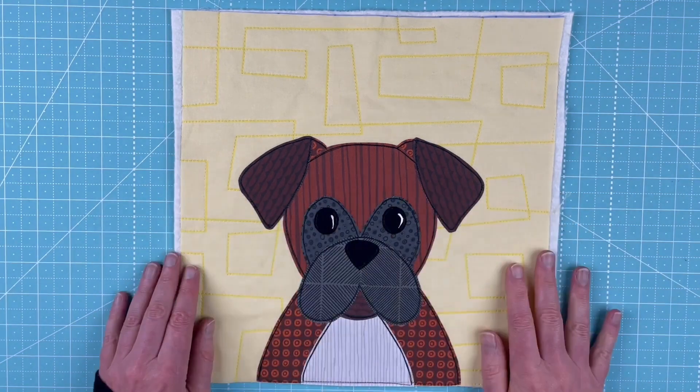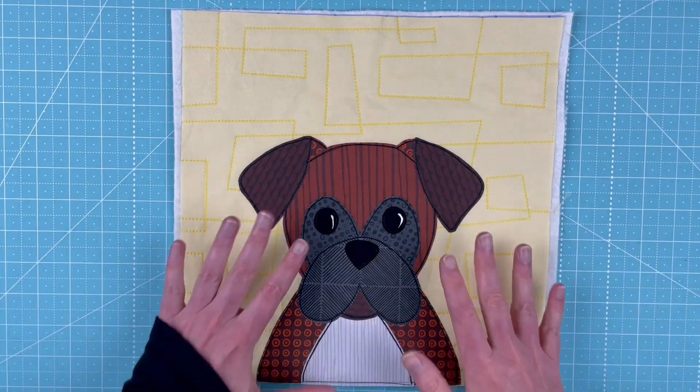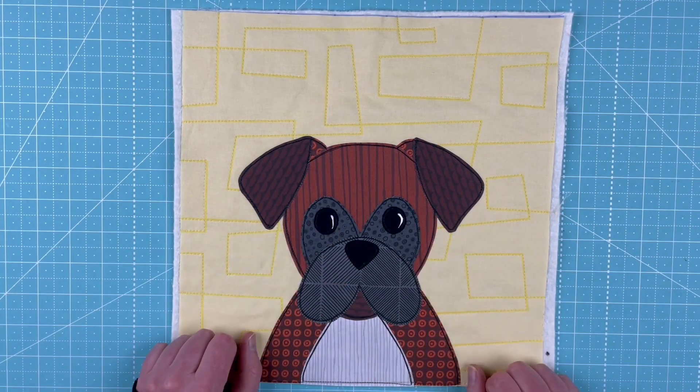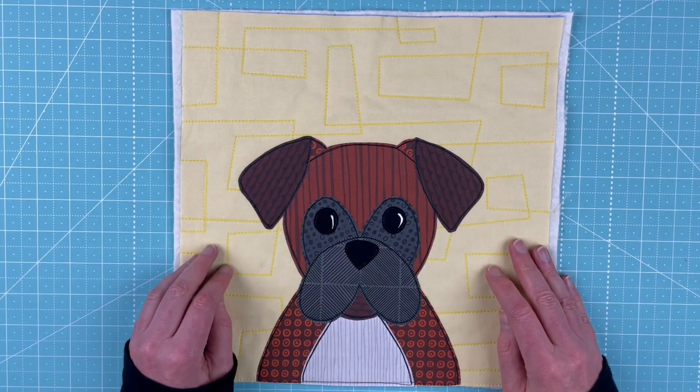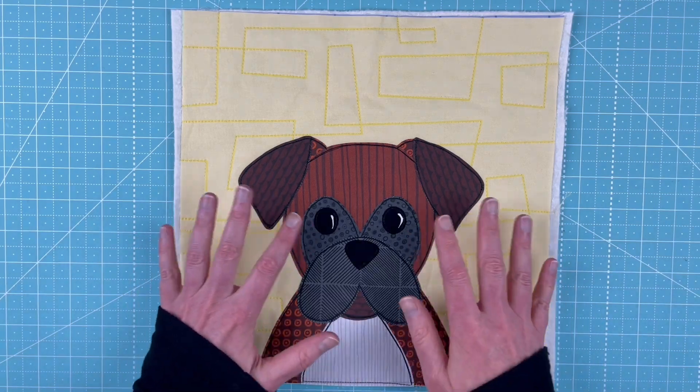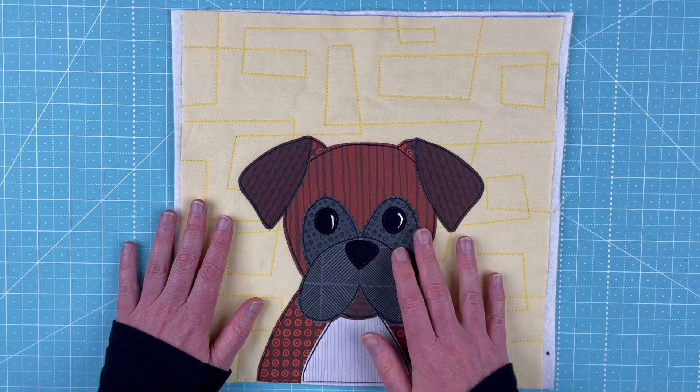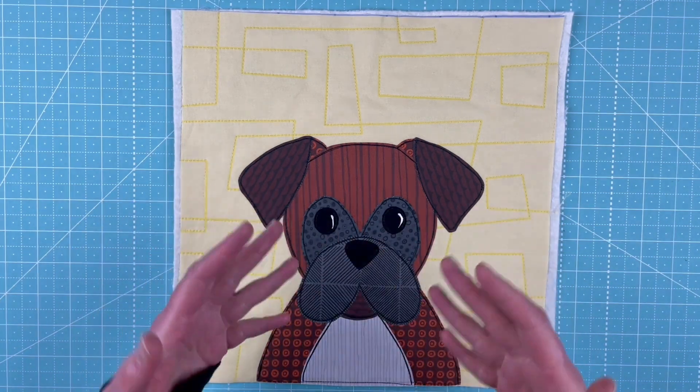All right, here's the boxer. He's all finished. I fused everything down, I've done the outline stitching all around the pieces. I also added some catch lights to his eyes to really bring them to life. That's not included in the video, but there is a separate tutorial that explains three different ways to add catch lights to any applique eyes and there's a link to that tutorial in the pattern.